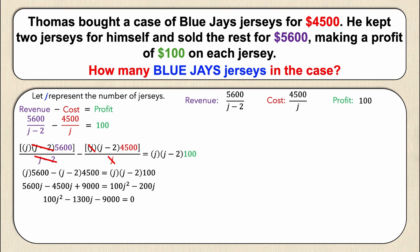I can factor out 100 from each term, so dividing each term by 100 gives: 100 times (j squared minus 13j minus 90) equals zero.